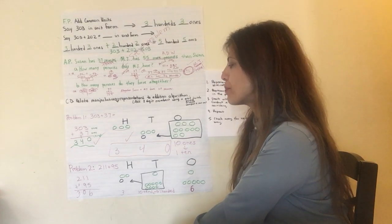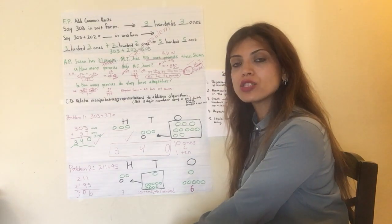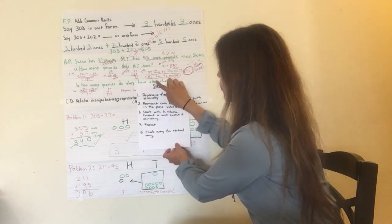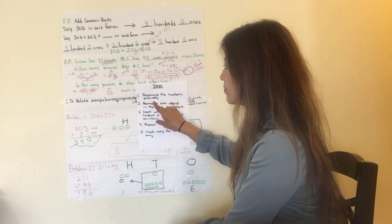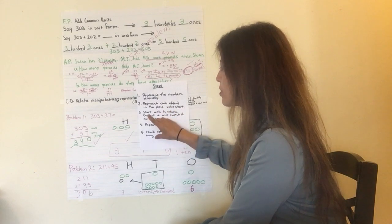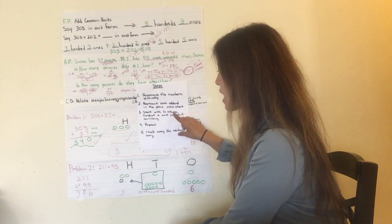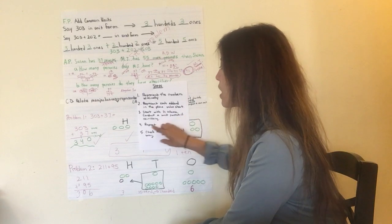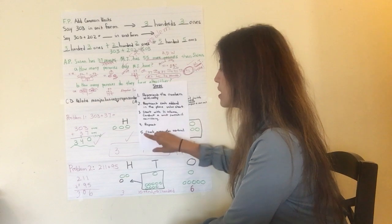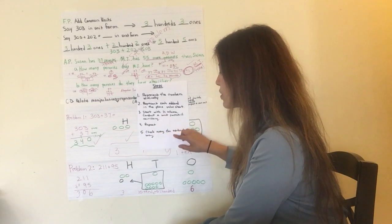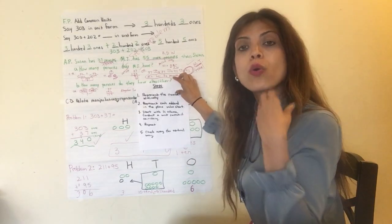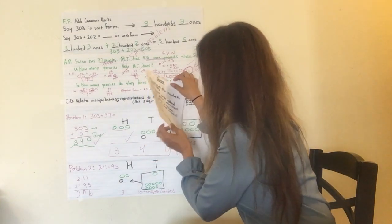You're going to watch me first. And problem two, you are going to solve with me. So, let's look at the steps. The steps include, represent the numbers vertically. Number two, represent each item in the place value chart. Number three, start with the ones column. Conduct a unit switch if necessary. Number four is repeat the process with the tens column and the hundreds column. Step five, check using the vertical way. Again, you remember this. This seems very familiar because we've done this work in module four. Good work.